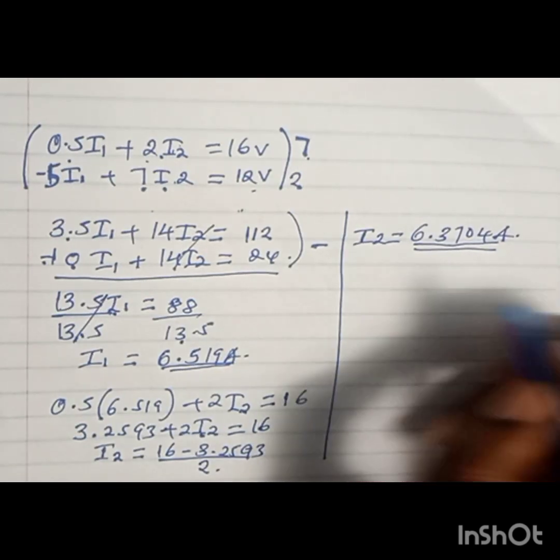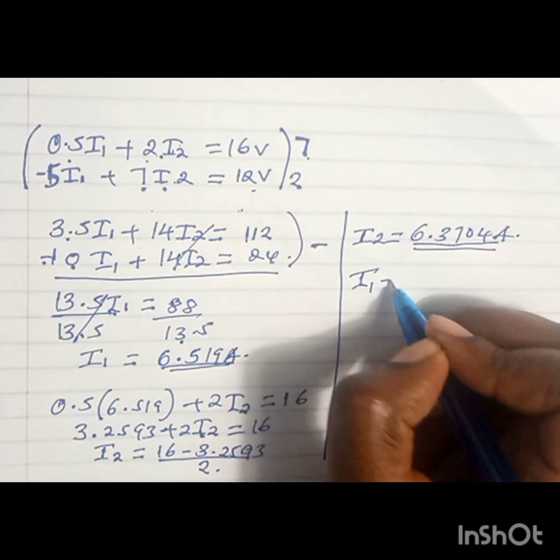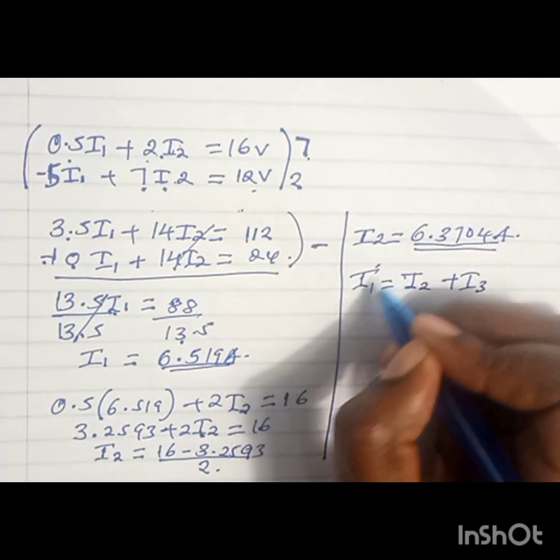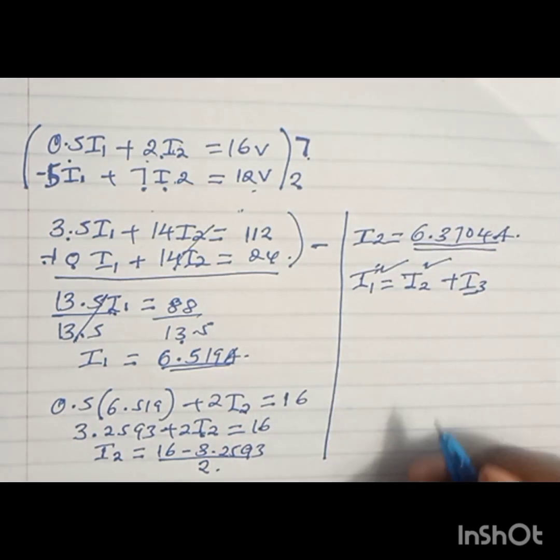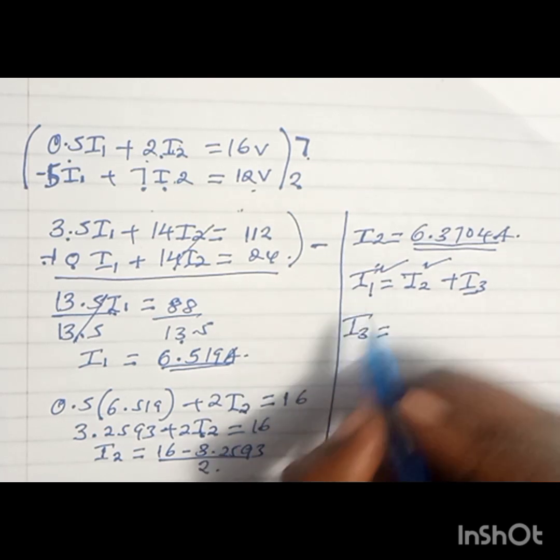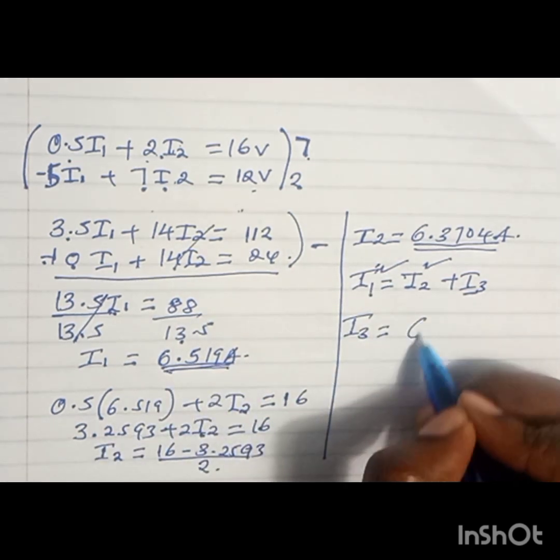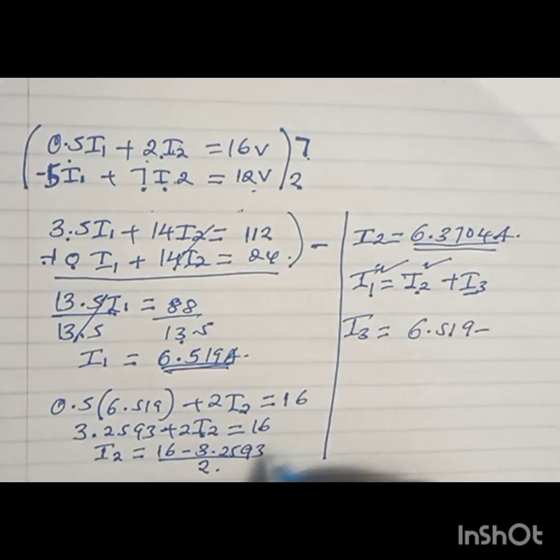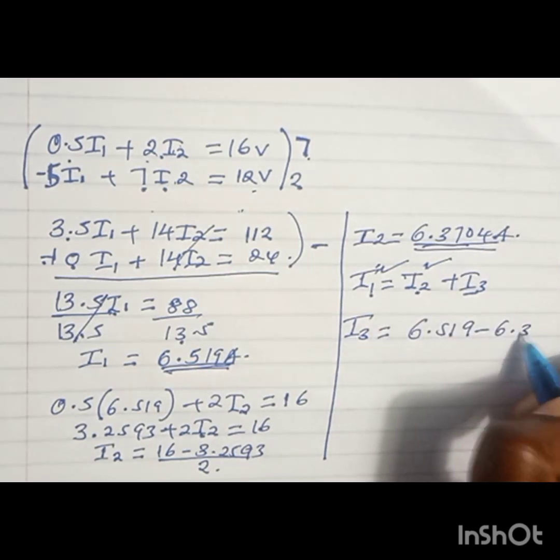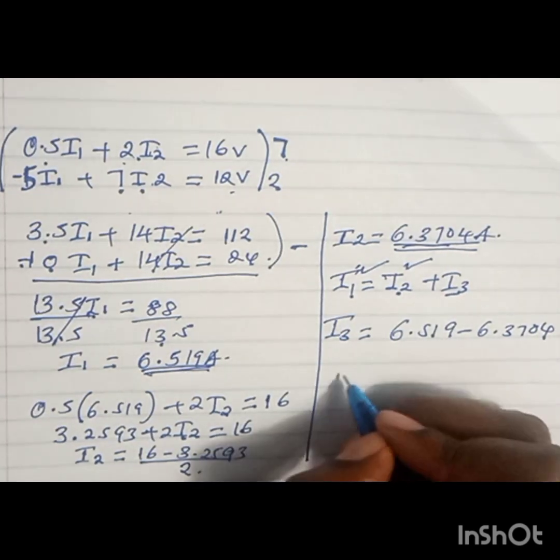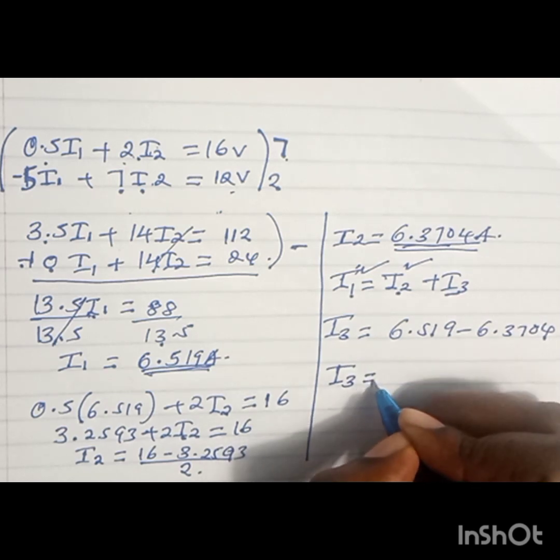From Kirchhoff's current law, we had said that I1 equals I2 plus I3. You already have I1 and I2, so you can obtain I3. This I3 will be equal to I1, which is 6.519, minus I2, which is 6.3704. When you subtract the two, we have I3 as 0.1486 amperes.